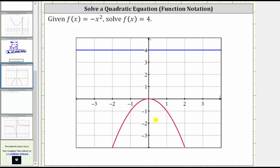Notice how there are no points of intersection, which indicates the solutions to f of x equals four are complex solutions, which again, we will learn about very soon.